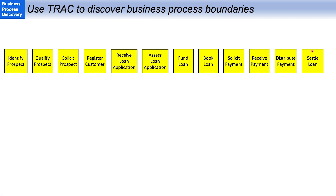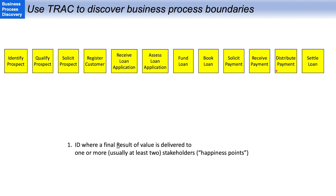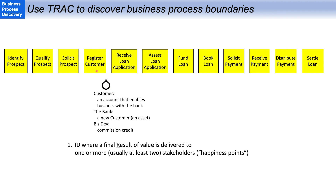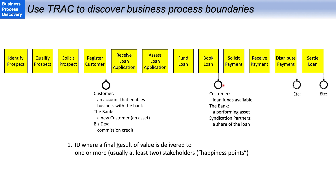So, using TRAC to discover the processes — the boundaries between chains of activities that make up a process. I'm going to start with looking for results, because that's what a process exists for: to deliver a result. I refer to them as happiness points. The first happiness point was when we have registered a new customer — all of these activities are leading up to the customer being happy because they have an account and the bank being happy because they have a new customer. Then the next chain of activities begins with a loan application and ends at the happiness point where the customer finds loan funds are available and the bank has a performing asset on the books.